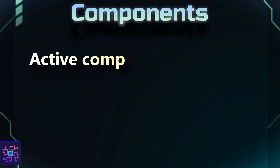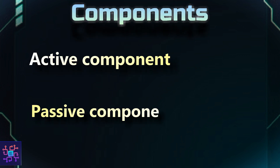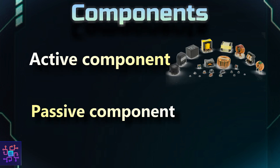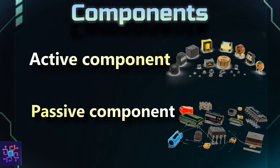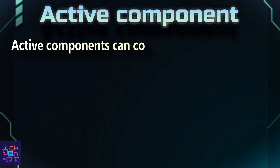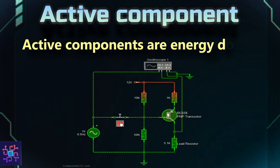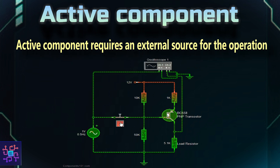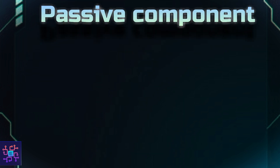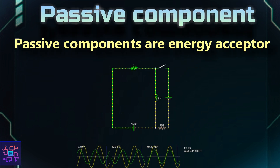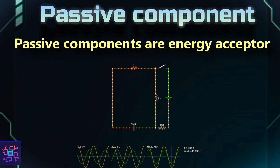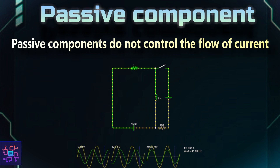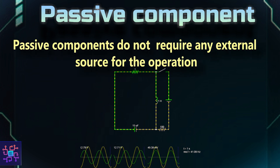To summarize: active components control the flow of current, they are energy donors, and they do require an external power supply. Passive components are energy acceptors, they do not control the flow of current, and they do not require any external power source.